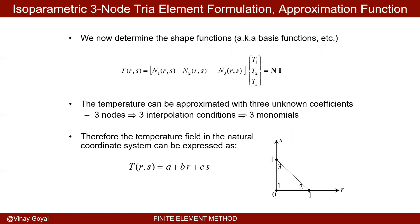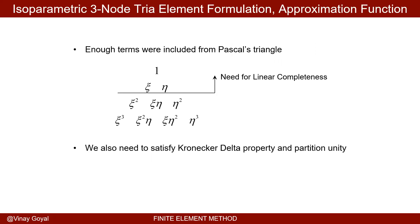We now will determine the shape functions. We have three unknowns — nodes one, two, and three — so three shape functions. The approximation is T(r,s) = A + Br + Cs. The Pascal triangle tells us that that's all we need for three nodes with three unknowns.